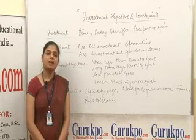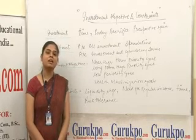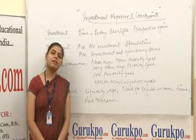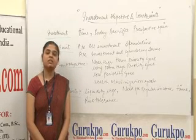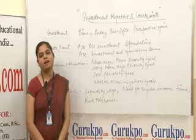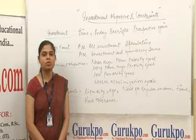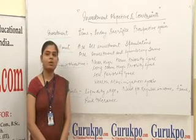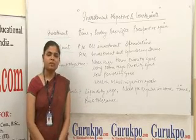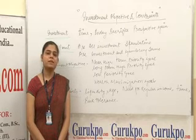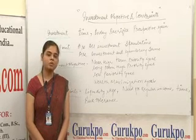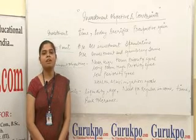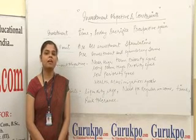The next constraint is time. Time is considered by the investor — there are two time periods: short time period and long time period. Generally, short time periods are taken by speculators, and long-term perspectives are taken by investors. The last constraint is risk tolerance. This is also a constraint of investment. Whatever risk the investor wants to take, they take it, but generally they avoid risk and take only calculated risk.